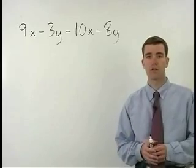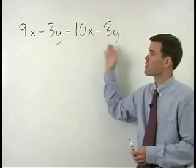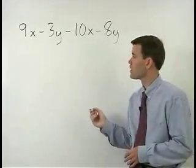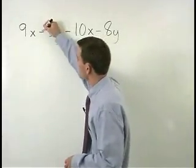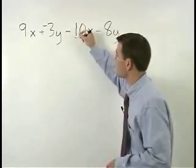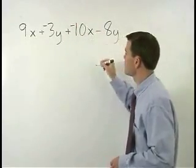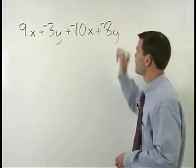As your first step to this problem, change all your minus signs to plus negatives. So we have 9x plus negative 3y plus negative 10x plus negative 8y.